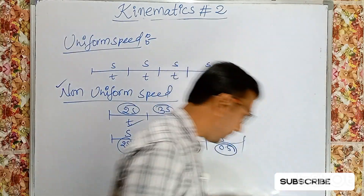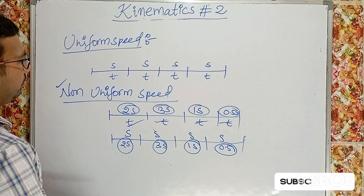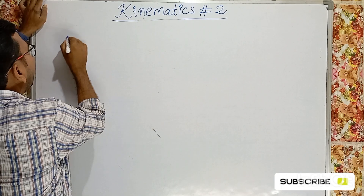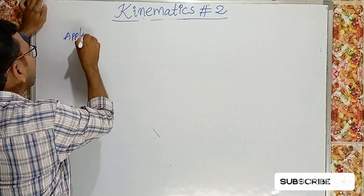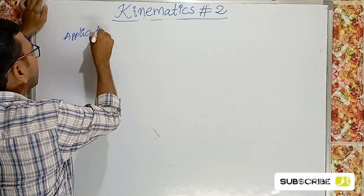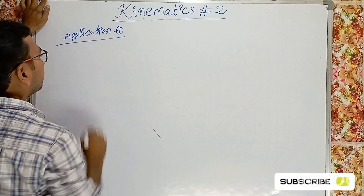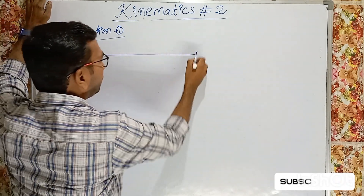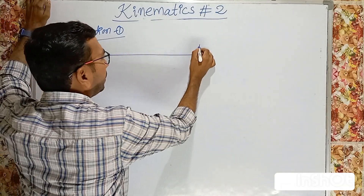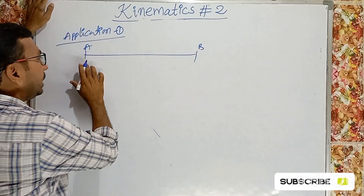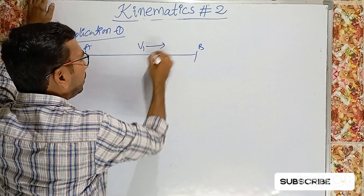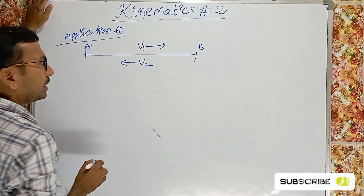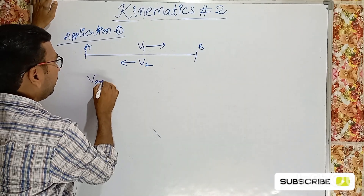Let's see some applications of average speed. Application 1: A person moves from point A to point B with speed V1, and then from B back to A with speed V2. Find the average speed.